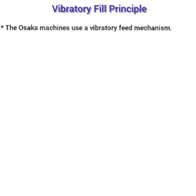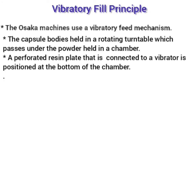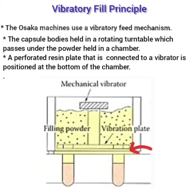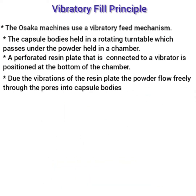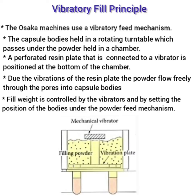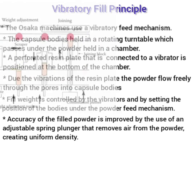The second principle is the vibratory fill principle. Mainly Osaka machines use the vibratory feed mechanism. The empty capsule bodies are placed on a rotating turntable and passed through a powder-filled chamber. A perforated resin plate with holes is placed at the bottom of the chamber; the vibrations of this plate allow powder to flow freely from the chamber into the empty capsule bodies. Fill weight is controlled by adjusting the vibrators and setting the position of the empty capsule bodies under the powder feed mechanism.